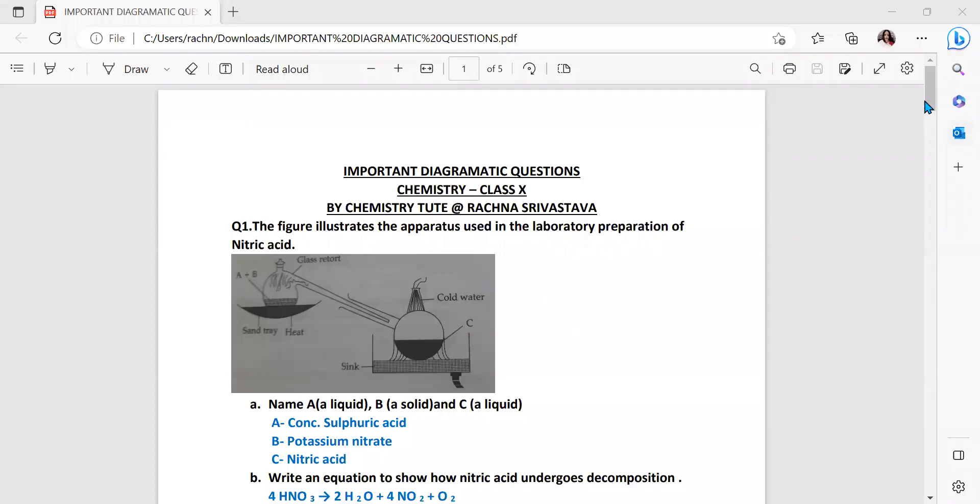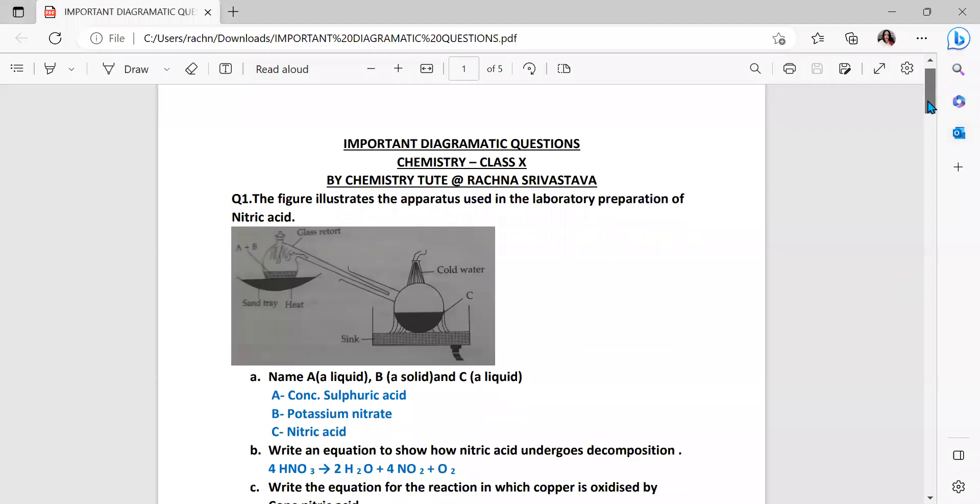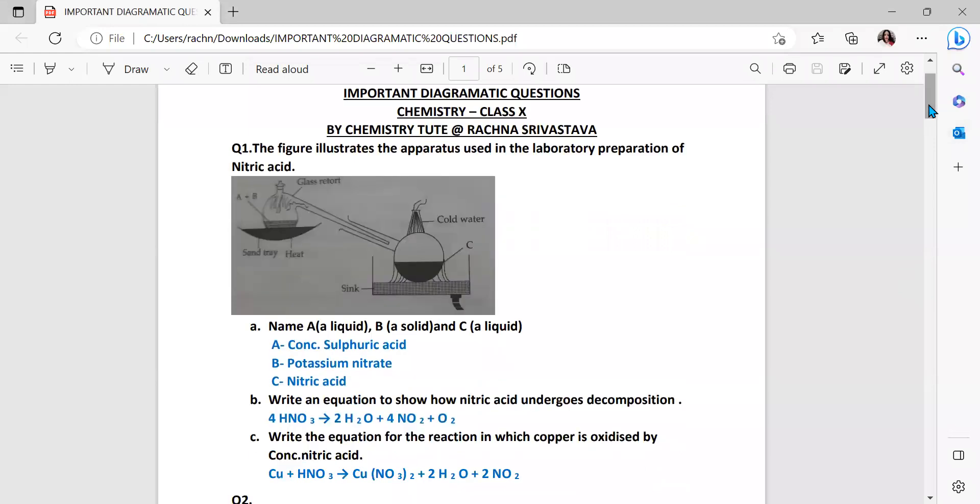These are the important diagrammatic questions. I have tried to cover the 10 years papers in this. Your question number one, if you see the figure, it says the figure illustrates the apparatus used in the laboratory preparation of nitric acid. I have tried to differentiate the question and answers by changing the ink color. Your answers are in blue.